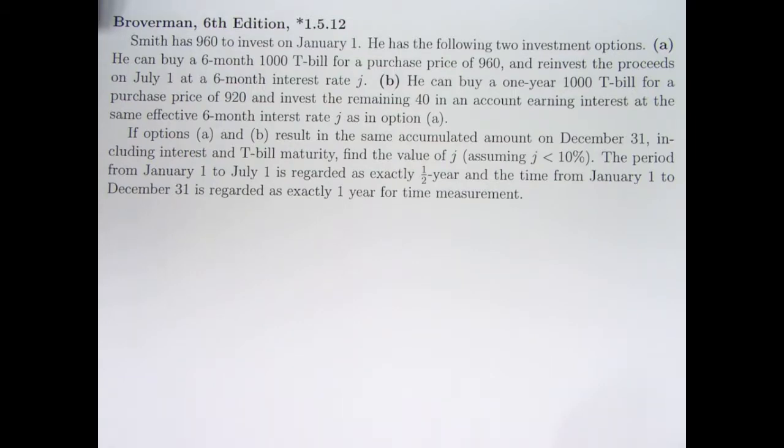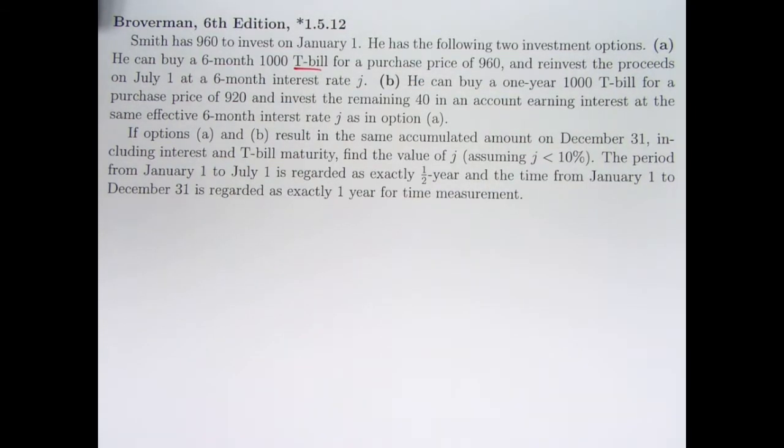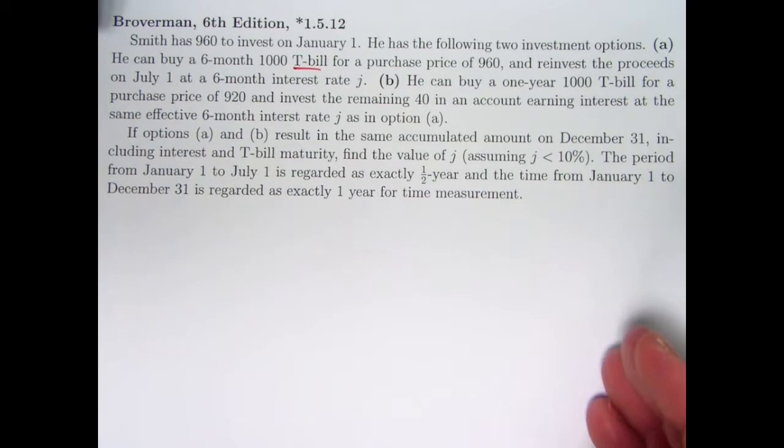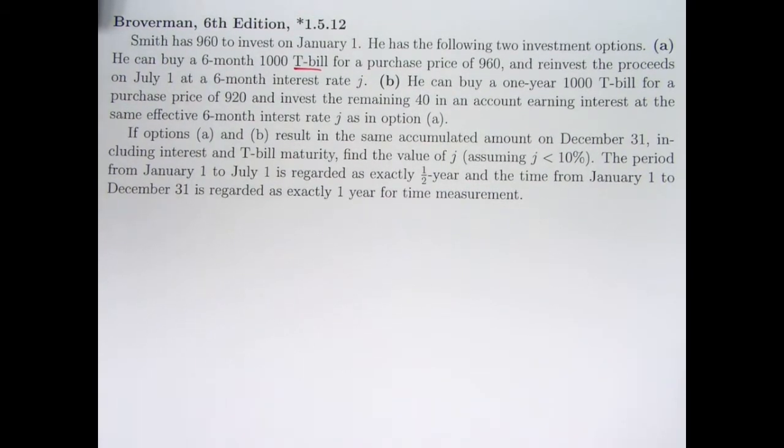What is a Treasury bill? A Treasury bill is an investment essentially in a government. You are giving the government money and they're gonna use your money to do whatever they want to do with it, and they are going to pay you back a higher amount at the end of the term when the T-bill comes to maturity. T-bills are short-term investments in governments.